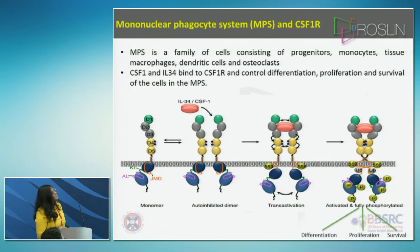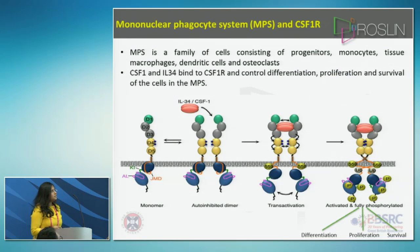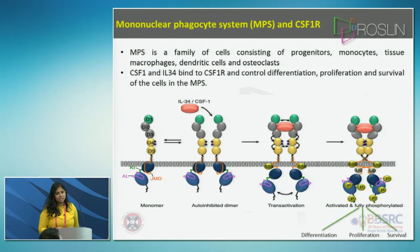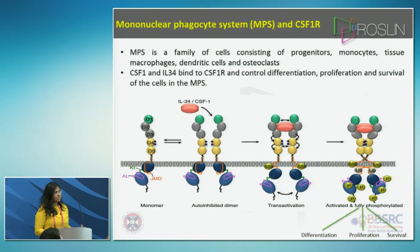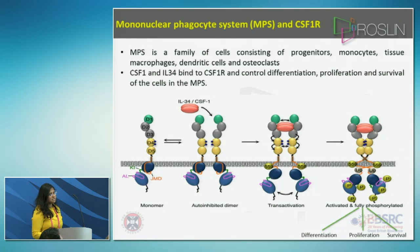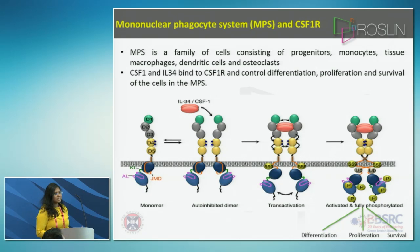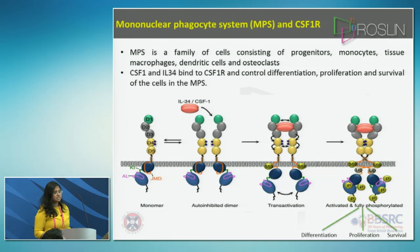To give a little bit of background: the main cells which are involved in the immune response are the mononuclear phagocyte system. This system comprises a family of cells which consists of progenitors, monocytes, tissue macrophages, dendritic cells, and osteoclasts.